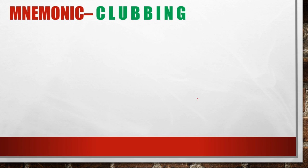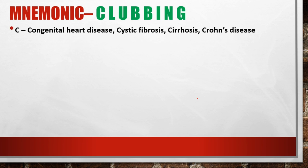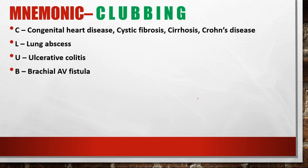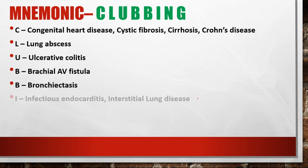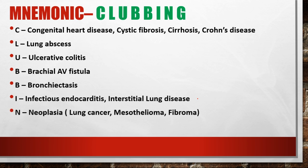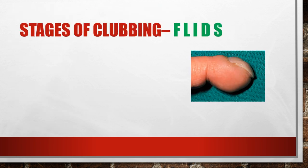Let's learn the mnemonic for the causes of clubbing — the mnemonic is CLUBBING itself. C refers to congenital heart disease, cystic fibrosis, cirrhosis of liver, and Crohn's disease. L is lung abscess. U refers to ulcerative colitis. B means brachial arteriovenous fistula. Another B refers to bronchiectasis. I means infectious endocarditis and interstitial lung disease. N refers to neoplasia such as lung cancer, mesothelioma, and fibroma. G refers to Graves' disease or thyrotoxicosis.